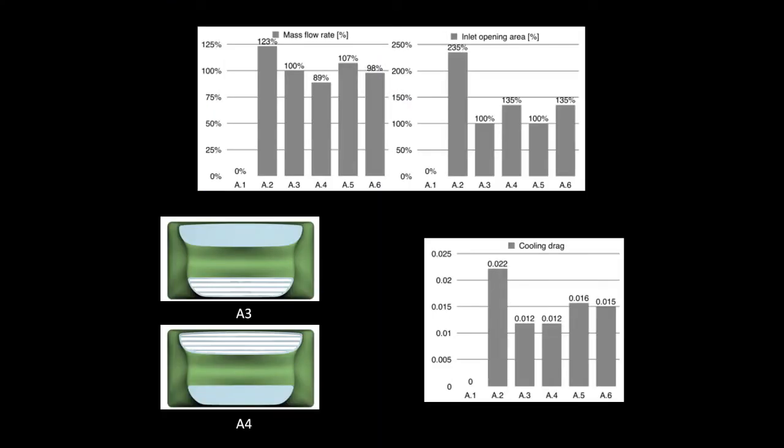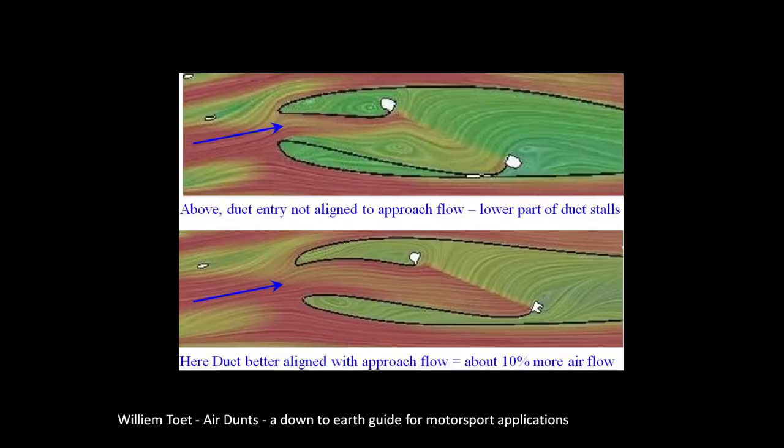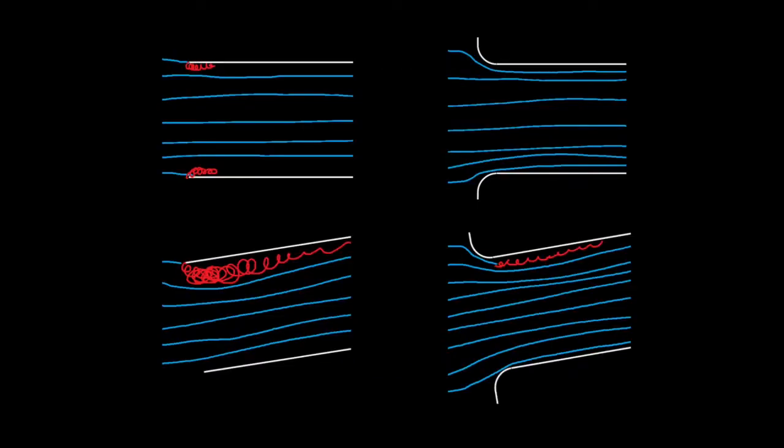All of these things mean that despite the upper grill being 35% larger than the lower grill, it is only flowing 89% of what the lower grill is, but is producing the same amount of drag. Here we have another example, where a slightly misaligned duct causes the flow to stall. A redesign increased flow by 10%. One way to help with aligning the duct under all driving conditions is to radius the edges.